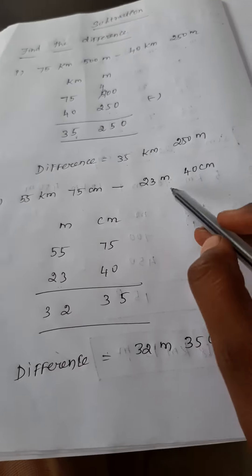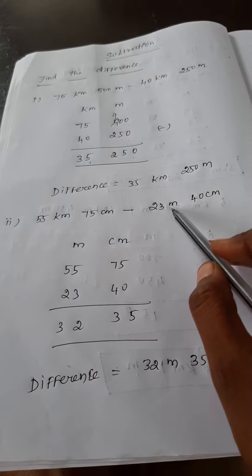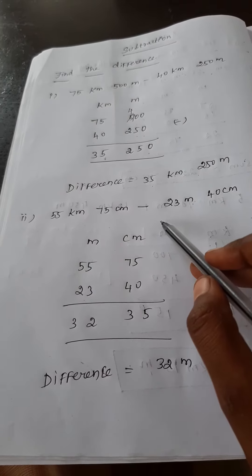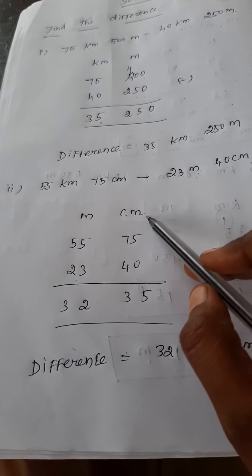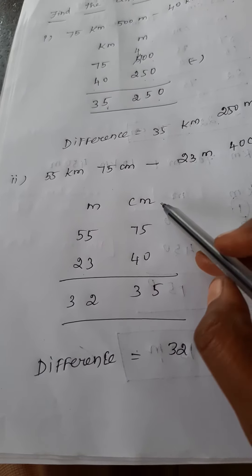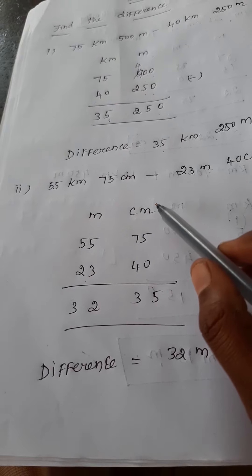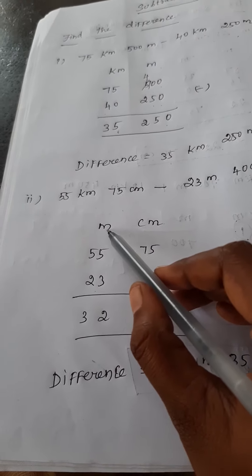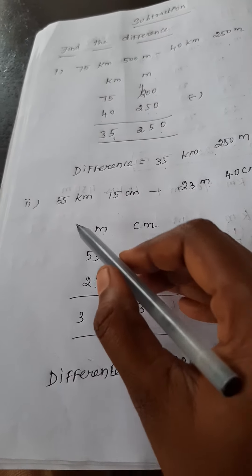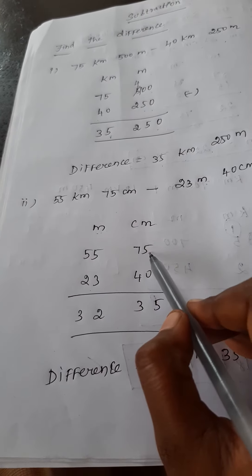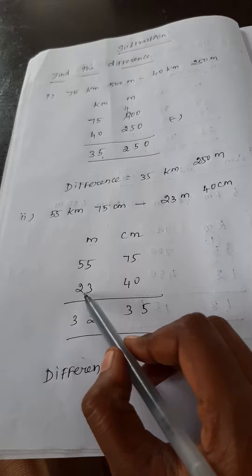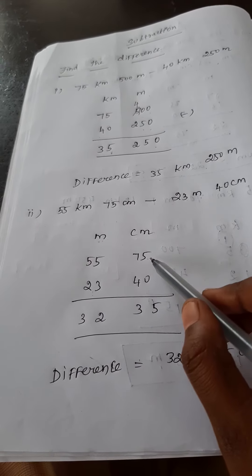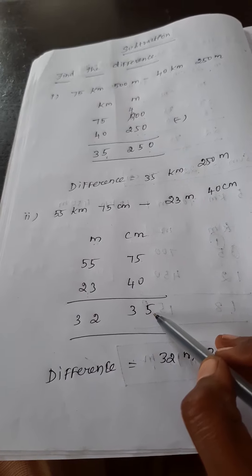In this same manner here. 55 kilometer 75 centimeter and 23 meter 40 centimeter. What are the two place values we have used there? One is meter and another one is centimeter. So I can write here itself. So 55 and 75 centimeter of 23 meter and 40 centimeter.